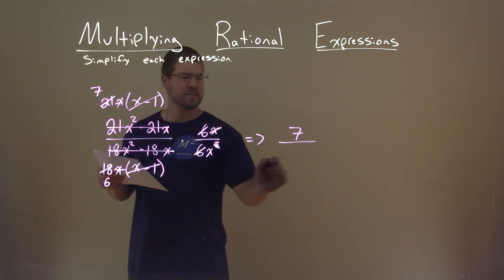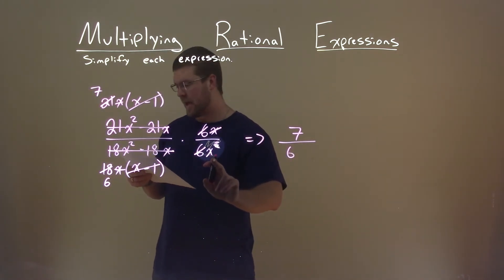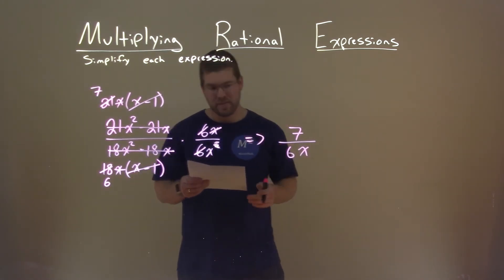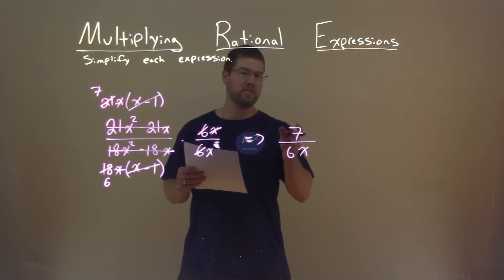What's left in the denominator is a 6 as well as that x. Don't forget it. And so, 7 divided by 6x here is our final answer.